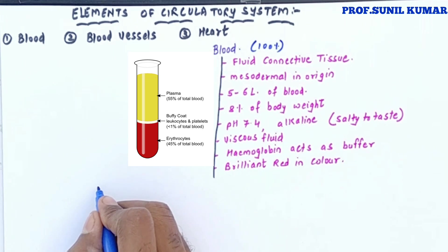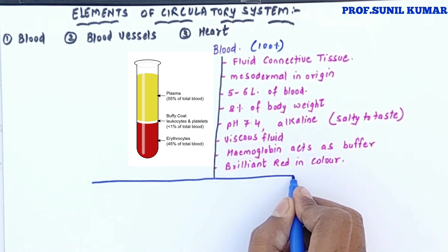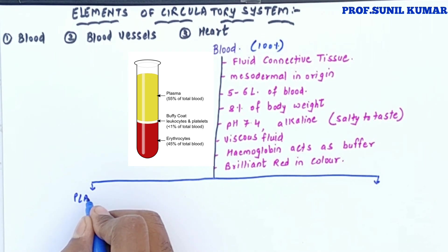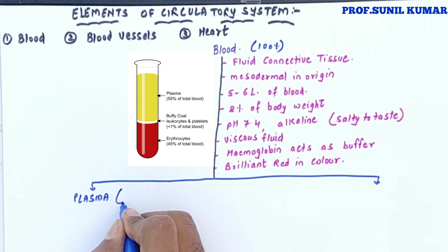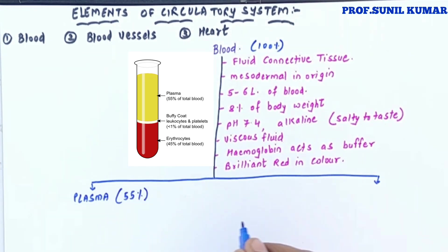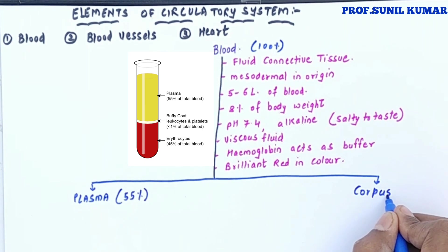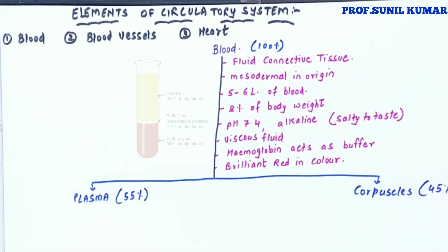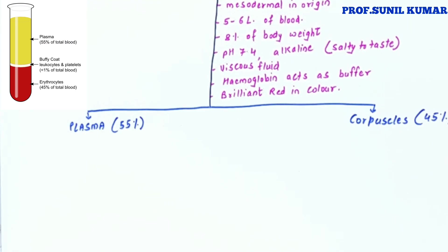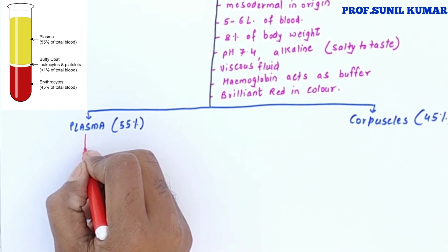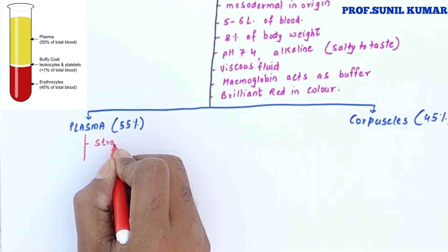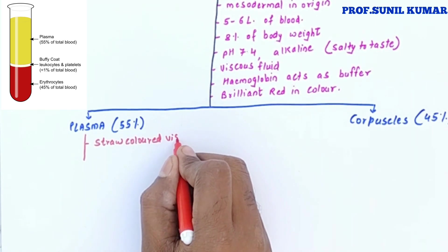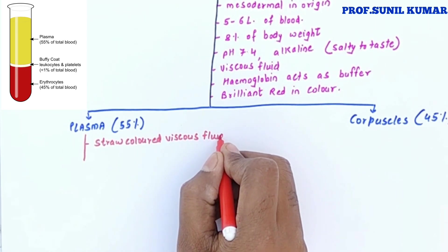If we take 100 percent of the blood and centrifuge it, we find two things: plasma, which is 55 percent, and the precipitate containing all the corpuscles, which is 45 percent. When we centrifuge, we get two layers — the precipitate and the supernatant. The supernatant, plasma, is a straw-colored viscous fluid. The pH of the plasma is the same as the pH of the blood.